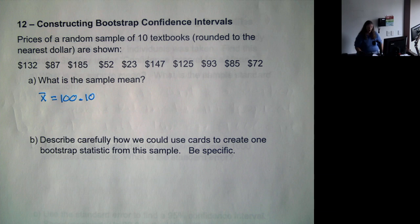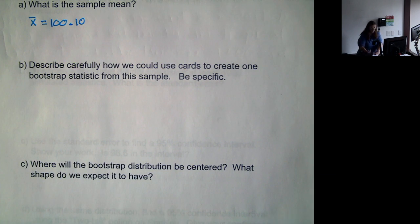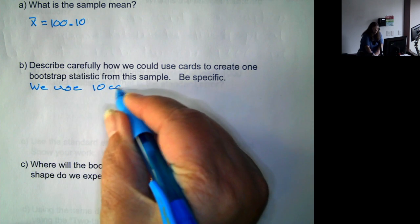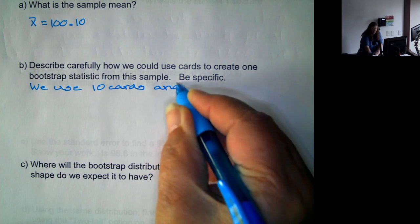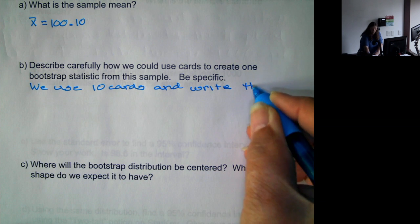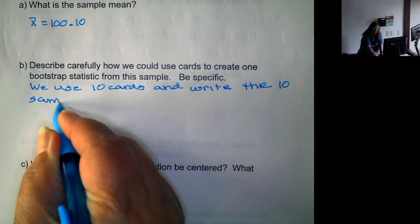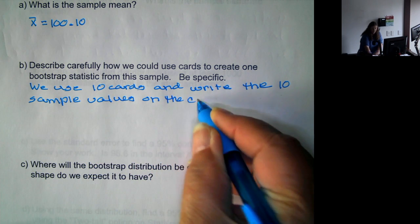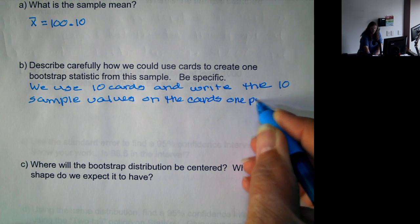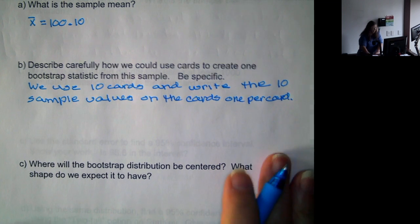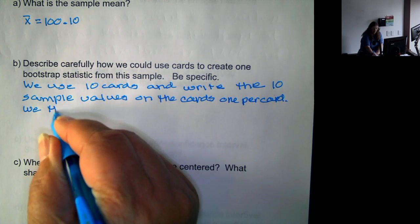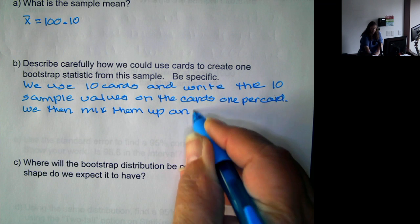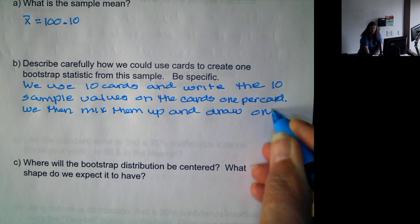How could we use cards to create a bootstrap statistic from this sample? We're going to use 10 cards and write the 10 sample values on the cards, one per card. We then mix them up and draw one card.